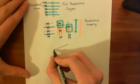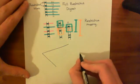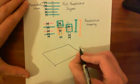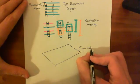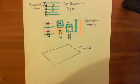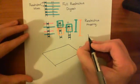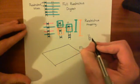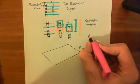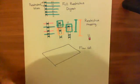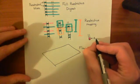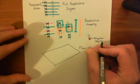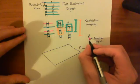A flow cell is basically a glass plate. What you do is attach your DNA fragments onto this flow cell. You can't directly attach them — in order to attach your DNA fragments you have to add a special portion of DNA to the end of your fragment, called an adapter piece of DNA.